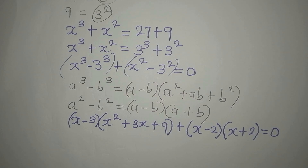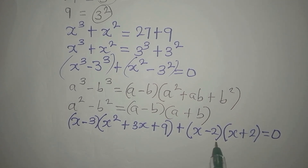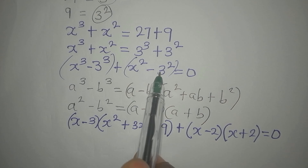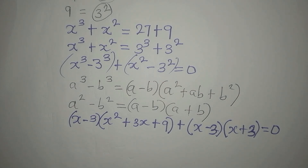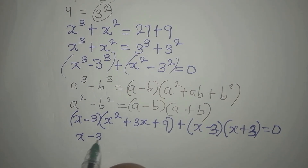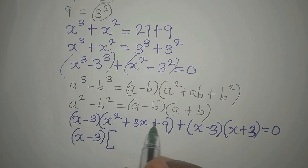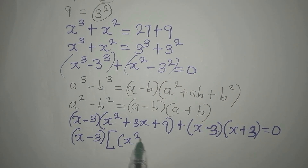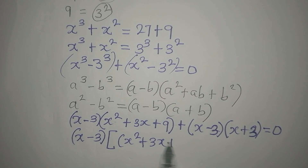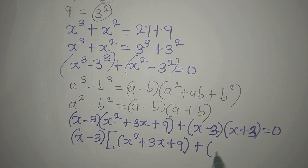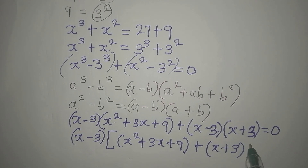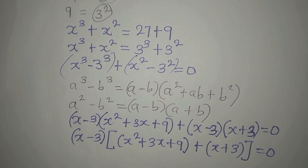Everything is equal to 0. Now you realize that (x minus 3) is common in both parts. Our b is 3 — so this is 3 and this is 3. Since (x minus 3) is common, we factor it out: we have x minus 3, then multiplied by the whole of x squared plus 3x plus 9, plus x plus 3, and we equate everything to 0.